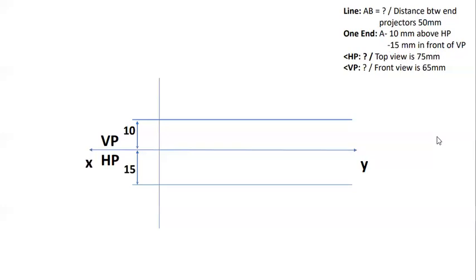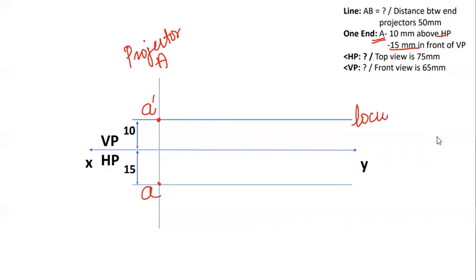First, mark the point A: 10mm above HP and 15mm in front of VP. The HP is the reference line. We mark A' (front view of A) and A (top view of A). The vertical line through them is Projector A. The horizontal lines are the Locus of A' and Locus of A. This is the first data.